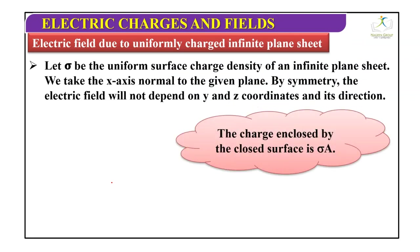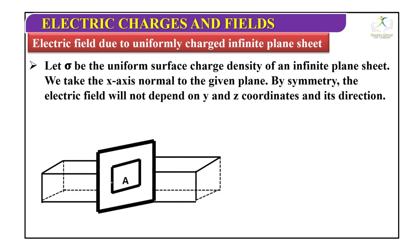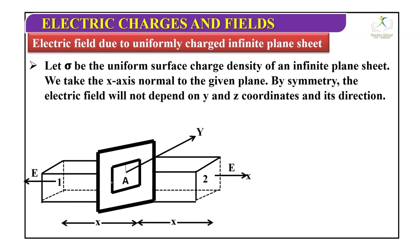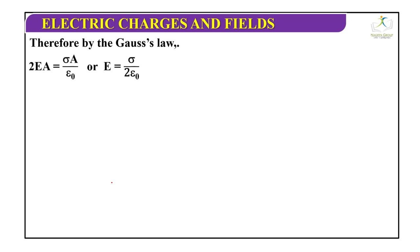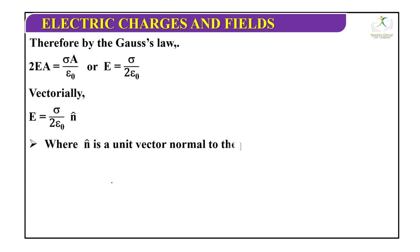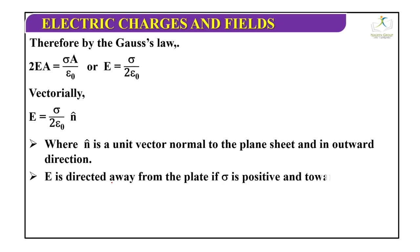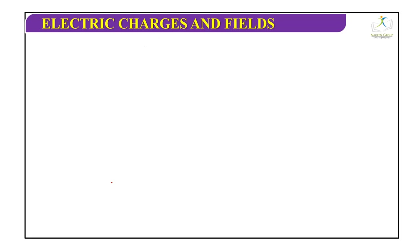The unit vector normal to surface 1 is in the negative x direction, while for surface 2 it is in the positive x direction. Therefore, E dot delta S through both surfaces adds up. By Gauss law, 2EA equals sigma A by epsilon naught, and we get E equals sigma by 2 epsilon naught. Vectorially, E equals sigma by 2 epsilon naught times N cap, where N cap is the unit vector normal to the plane sheet in the outward direction. E is directed away from the plate if sigma is positive, and towards the plate if sigma is negative.